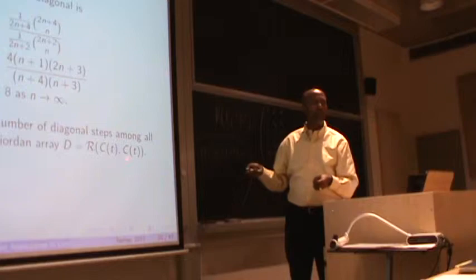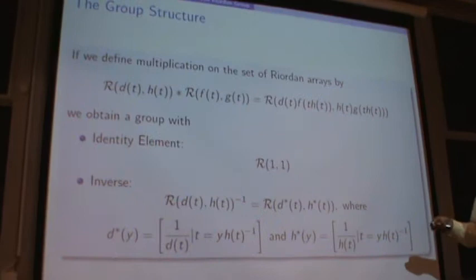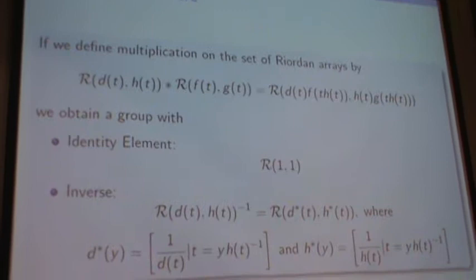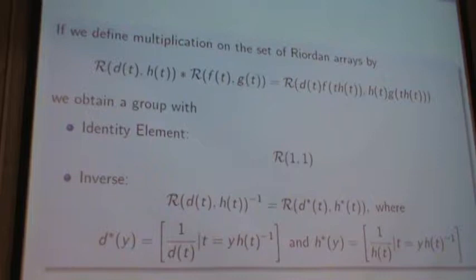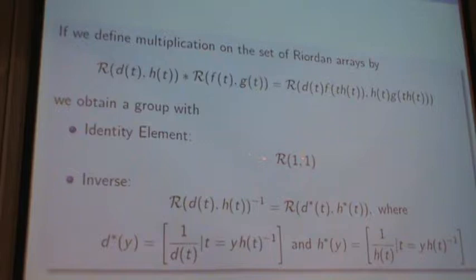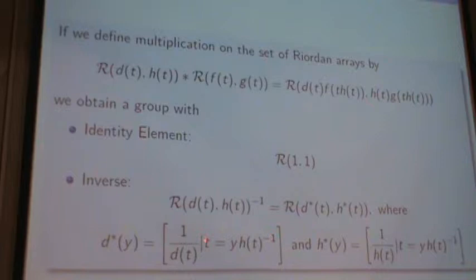We've talked about how Riordan arrays are applied in different settings. Now let's put everything together. We can extend the previous definition of matrix product and define a binary operation on the set of Riordan arrays. This is just matrix multiplication. It's easy to see that the identity element corresponds to D of T equals one and H of T equals one. The inverse for any typical element of the Riordan array is given by a formula where T equals Y times H of T to the power of negative one — an equation satisfying the Lagrange inversion formula — and can be uniquely solved if the Riordan array is a proper Riordan array.